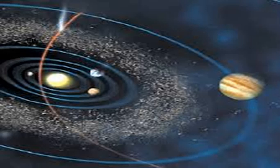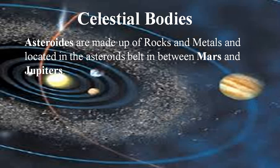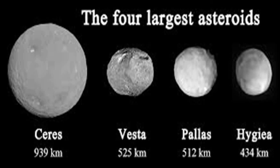In this picture you can see the celestial bodies in our solar system. This is an asteroid belt. Asteroids are made up of rocks and metals and are located in the asteroid belt, which is between Mars and Jupiter. There is also a Kuiper belt, which consists of ice rocks, gaseous clouds, etc. These are the four largest asteroids categorized by their dimensions: Ceres at 939 kilometers diameter, Vesta, Pallas, and Hygiea.